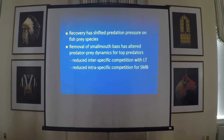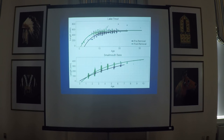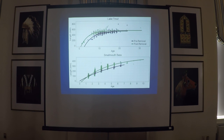The removal of smallmouth bass also seems to have altered the predator-prey dynamics for the two top predators. Specifically, it likely has reduced interspecific competition between lake trout and smallmouth bass, and also reduced intraspecific competition among smallmouth bass. We still need to do more analysis of the actual caloric content of the prey to better understand how that's affecting growth. But the length-at-age curves for both smallmouth bass and lake trout show that they are both growing faster and larger post-removal, suggesting the bass removal program has resulted in release from intense competition for limited prey fish resources.